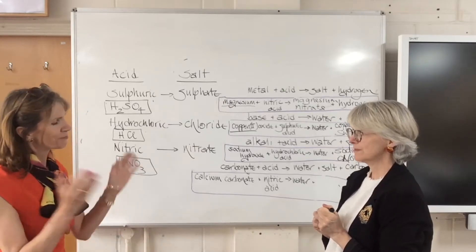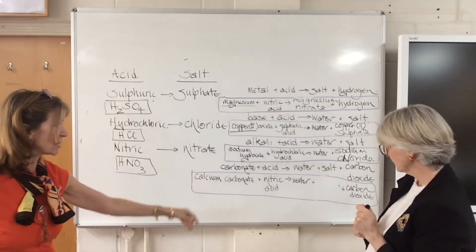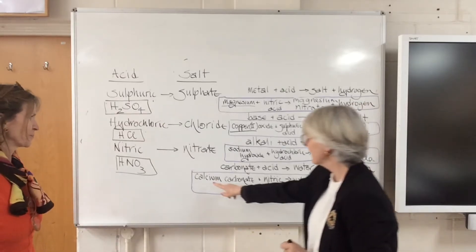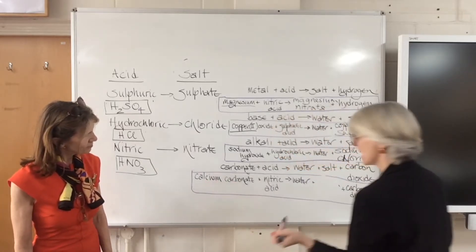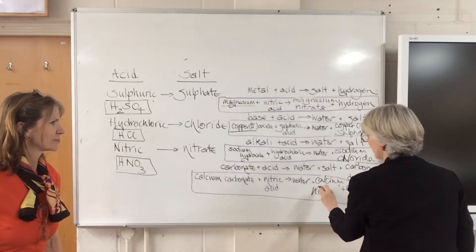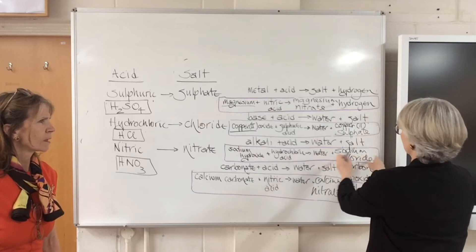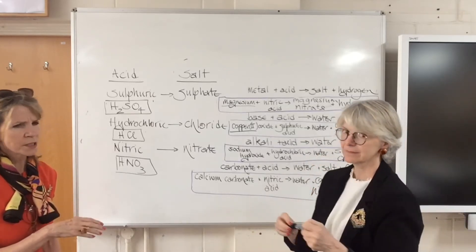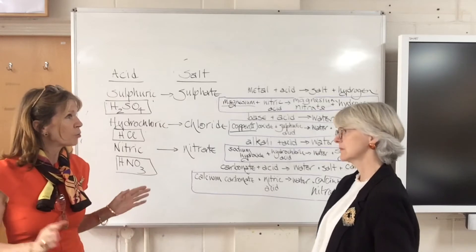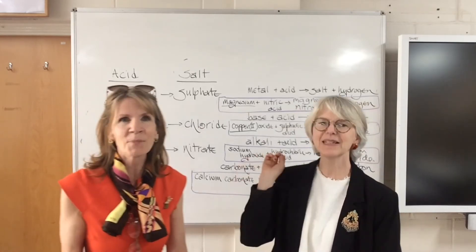Finally, the last general equation: carbonate plus acid gives salt plus water plus carbon dioxide. We're using calcium carbonate and nitric acid. Nitric acid gives nitrate, and we take the calcium from the calcium carbonate, so the salt is calcium nitrate — plus water and carbon dioxide. Those products are very important to include. Now that we've learned the general equations, the word equations are easy peasy lemon squeezy!